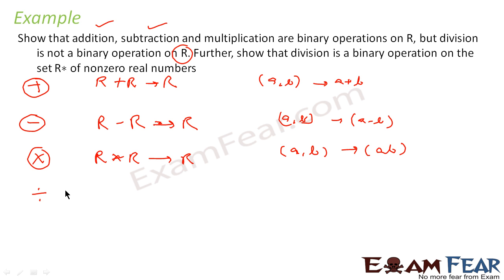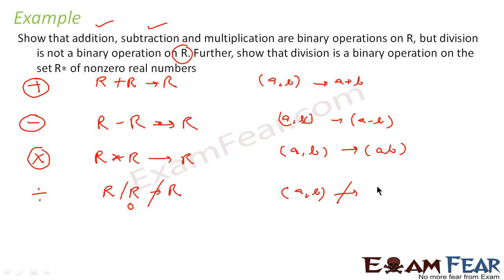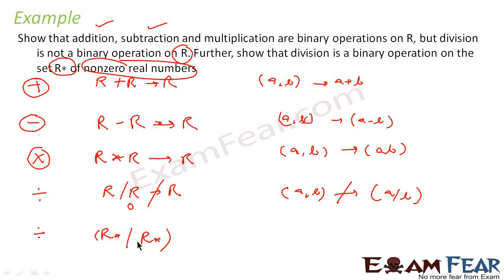For division, if you divide two real numbers it may not give a real number. For example, if you take any number and divide by zero — zero is a real number — you get infinity, which is not a real number. So division is not a binary operation on R. However, if you exclude zero from the real numbers and take non-zero real numbers R*, then the division property holds true. Dividing any non-zero real number by another non-zero real number always gives a non-zero real number.